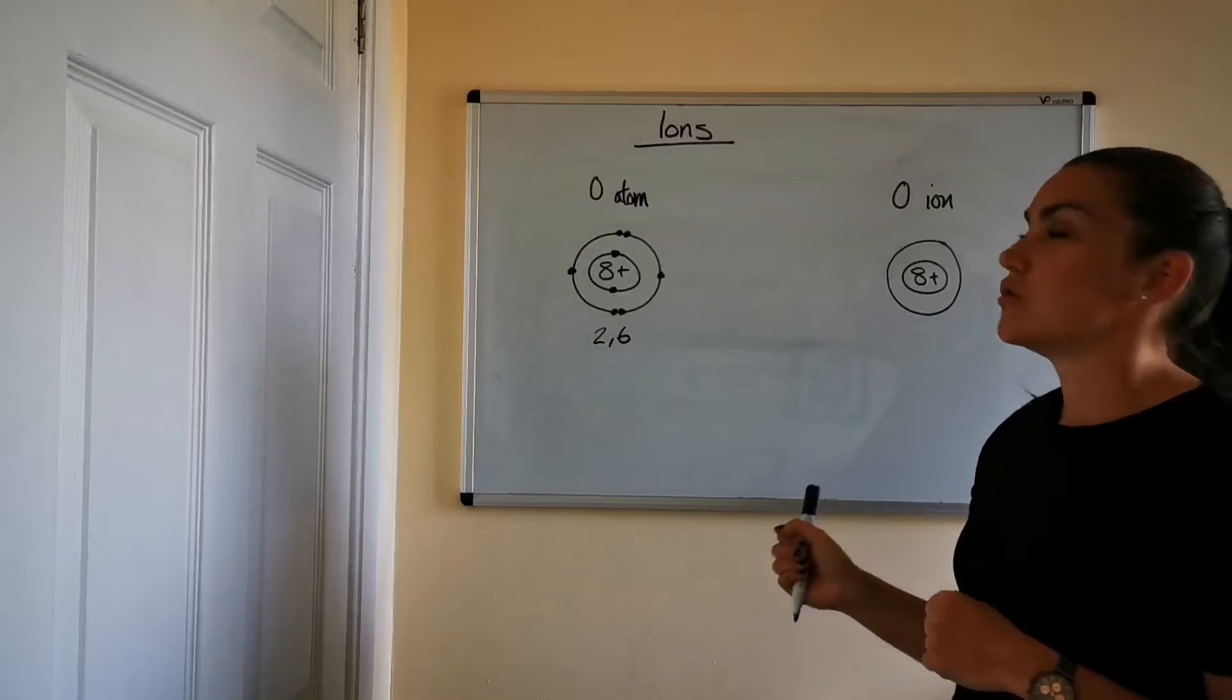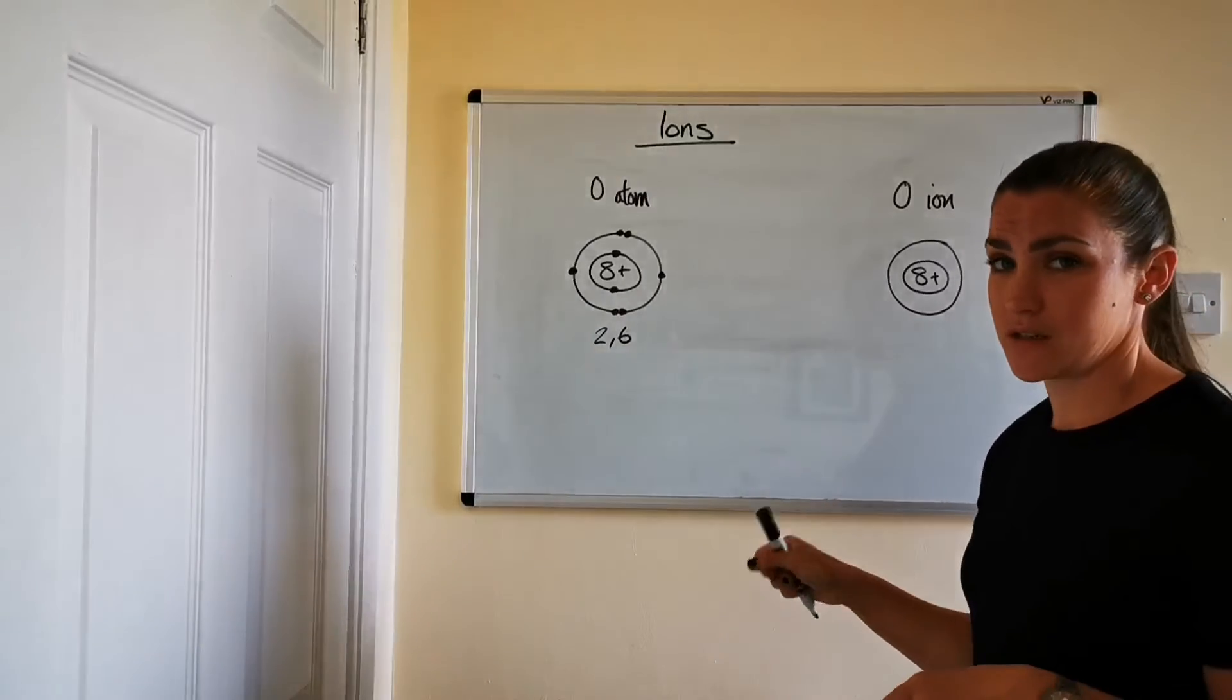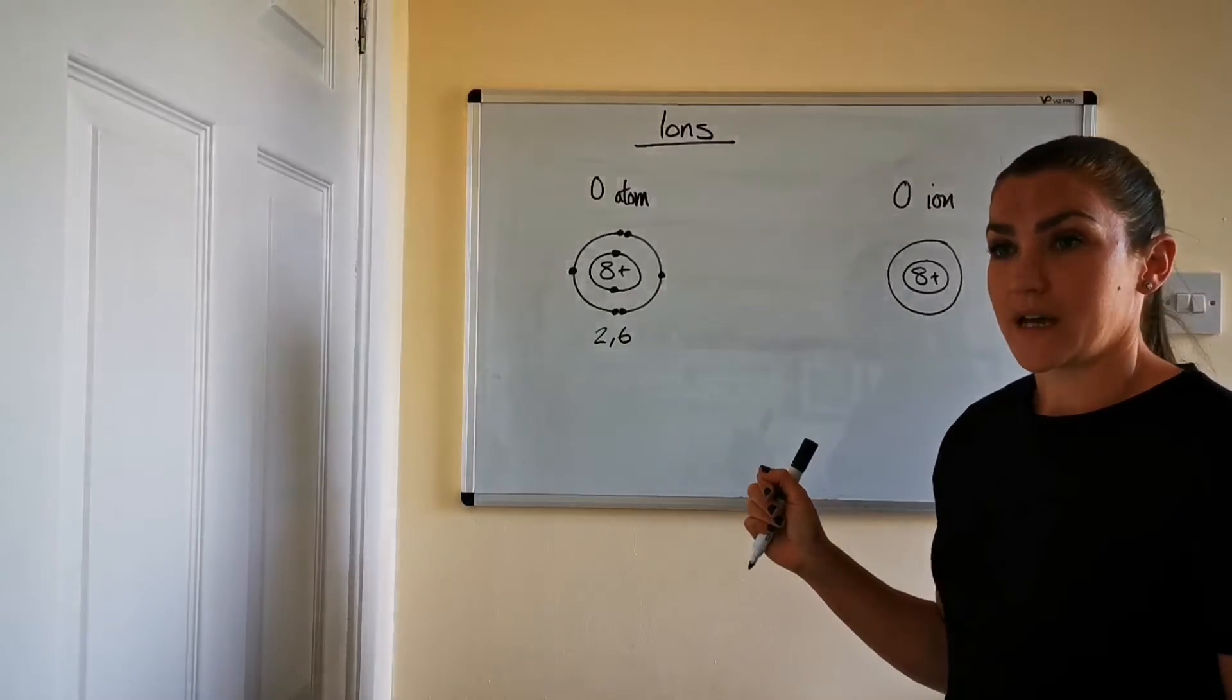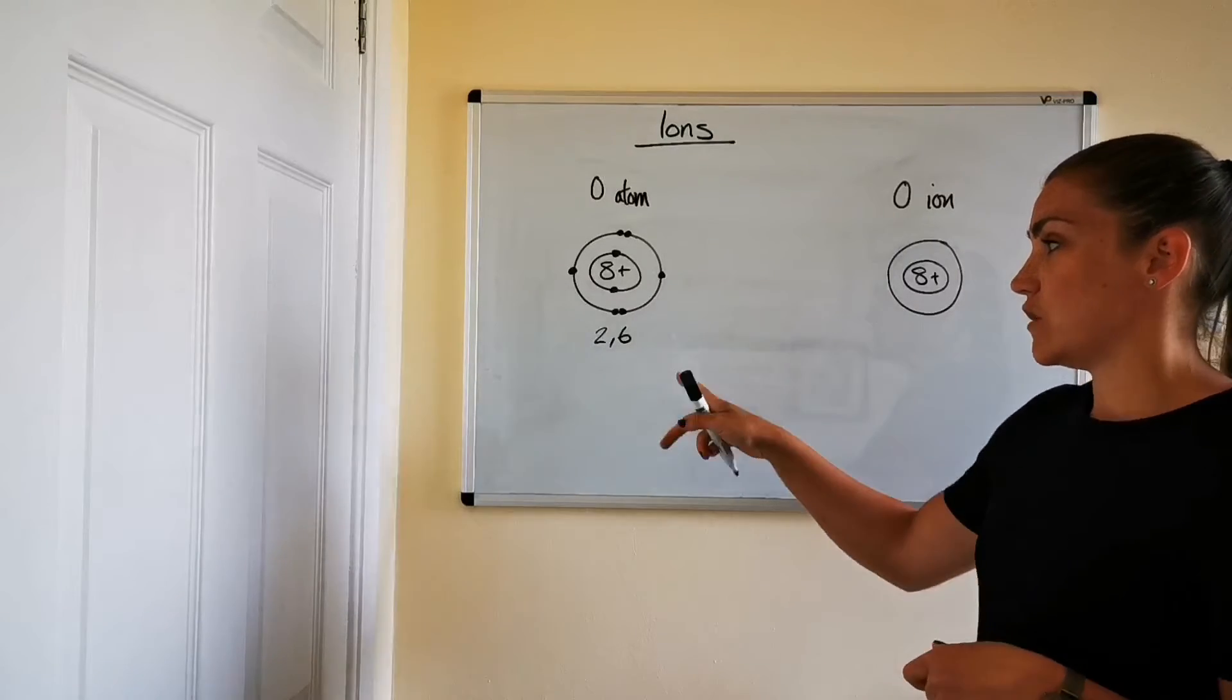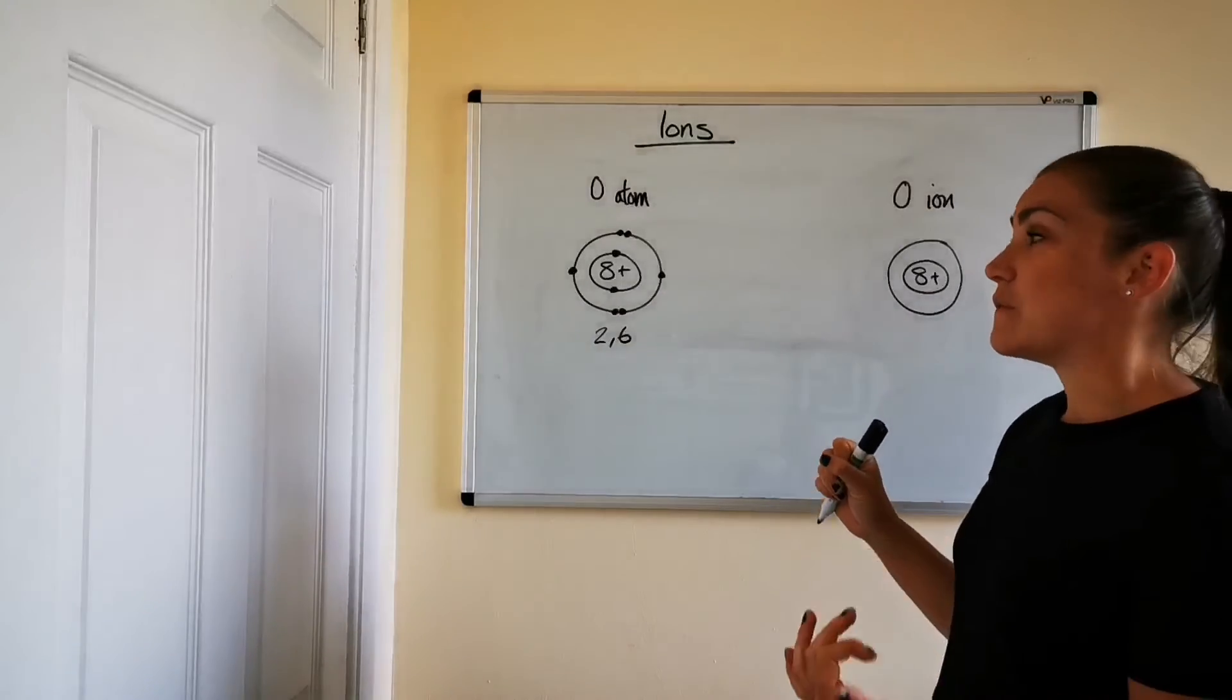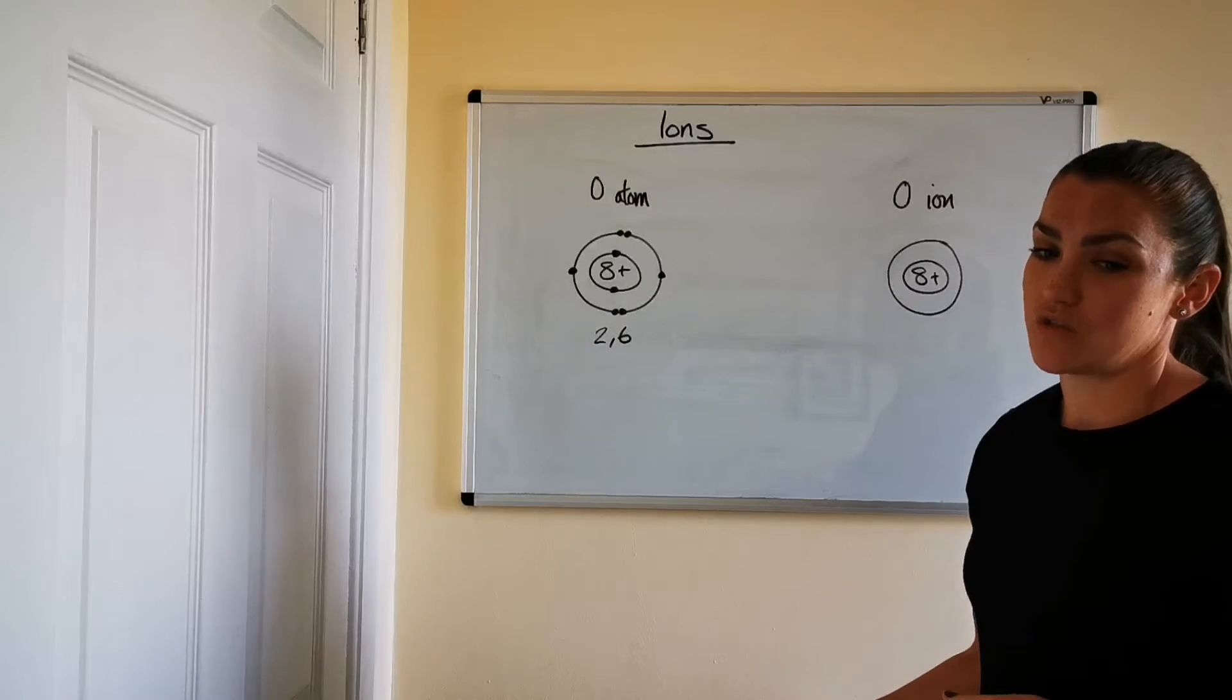So now we're going to look at a non-metal atom. So I've picked oxygen for this one. So the oxygen atom has the electron arrangement 2,6 and again you can always look that up in the data booklet. So if it's going to become stable like a noble gas it will need to fill its outer shell. So to fill the second level again we need eight electrons. So in order to do that it would gain two electrons. If it was going to lose its outer shell like the metals it would lose six electrons and again that involves more electrons being transferred.